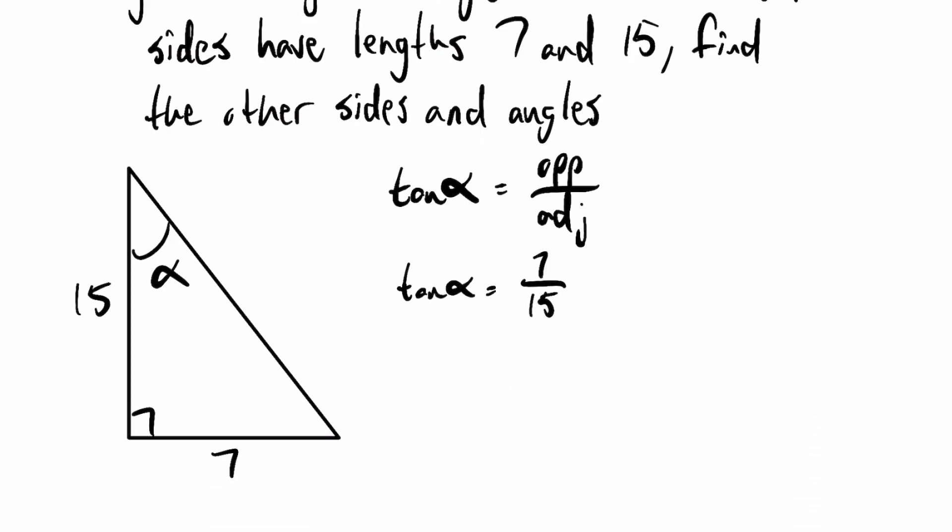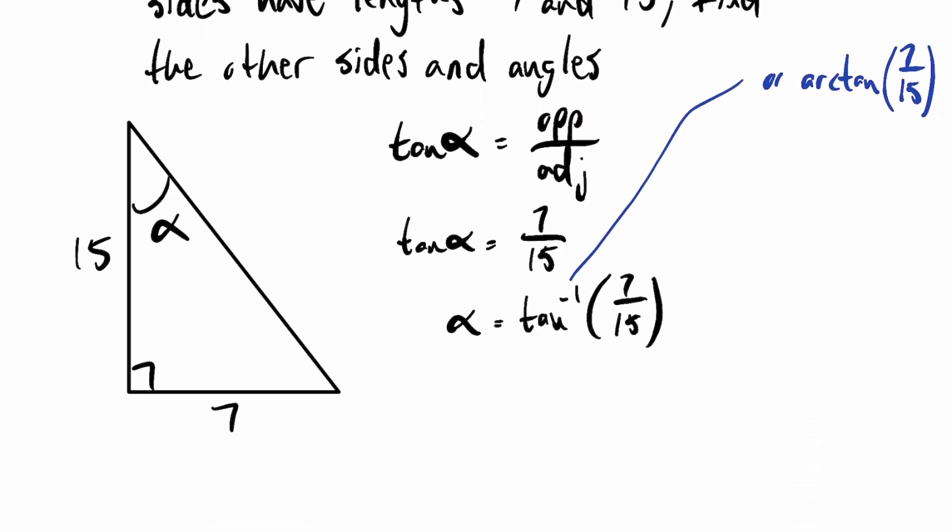Okay, so I can say that alpha equals tangent inverse of 7 over 15. Or if you like, you can say arc tangent. Let's make a note off to the side. Or if we want arc tangent. Some books will refer to this using slightly different notation. So I want to point out that this number we found, tangent inverse of 7 over 15, this is just a number.